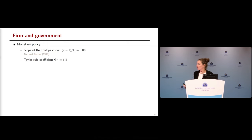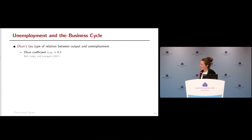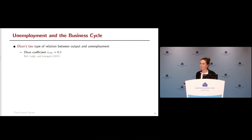The firm is calibrated with standard parameters: a Phillips curve slope of 0.03 and inflation response coefficient phi_pi of 1.5. Fiscal policy is carefully calibrated; notably a debt adjustment parameter of 0.75 means a large share of stabilization packages is debt-financed. For the cycle, we assume an Okun's law relationship where a one percent fall in output raises unemployment by 50 basis points — a standard parameter used at the Fed and consistent with empirical evidence, though possibly slightly large, which makes our calibration conservative.